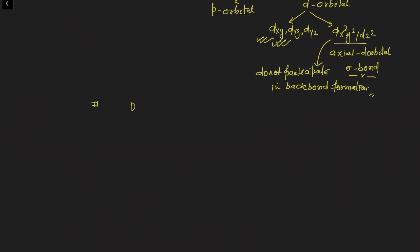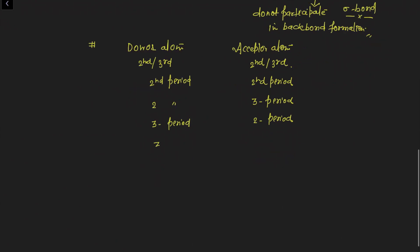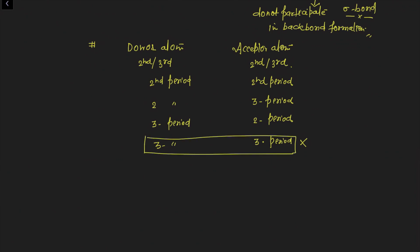The third condition is that the donor atom and acceptor atom must belong to either the second period or the third period. Valid combinations are: second period donor with second period acceptor, second period donor with third period acceptor, or third period donor with second period acceptor. However, if both donor and acceptor are from the third period, this combination will not generate back bonding — we will discuss this with examples later.